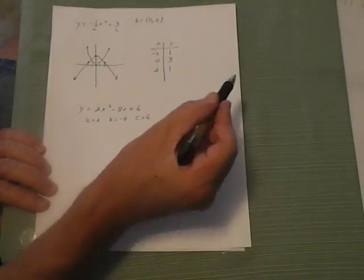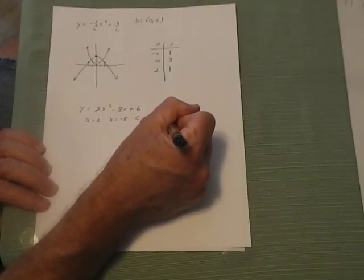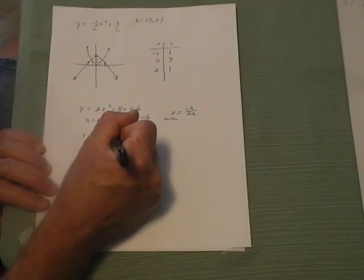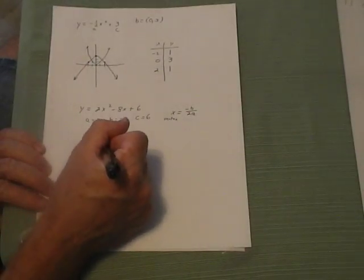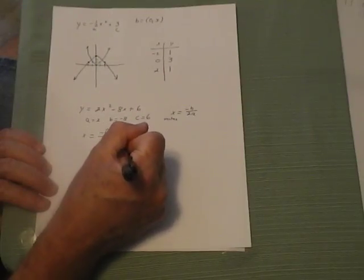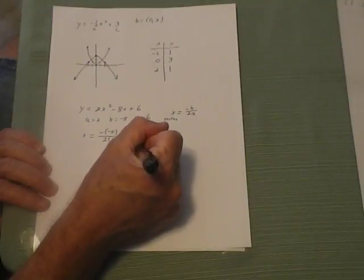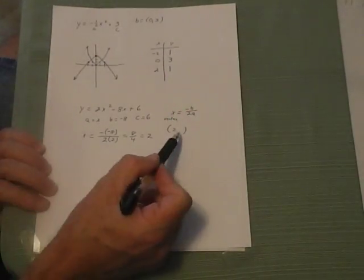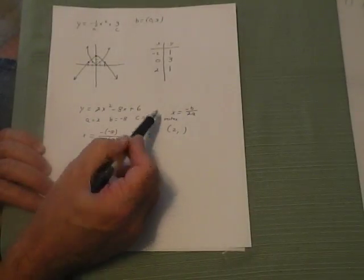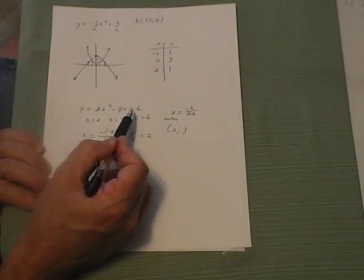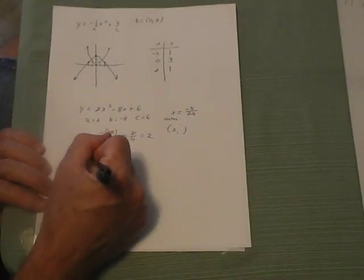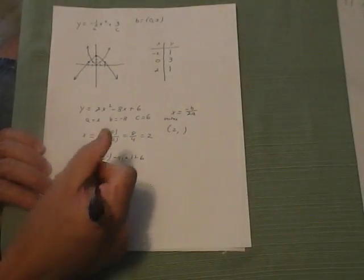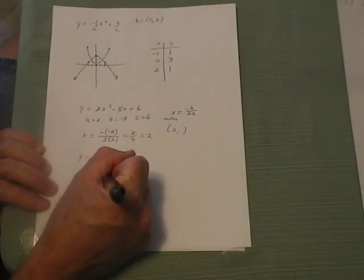The formula x equals negative b over 2a gives us the x value of the vertex. Substituting in, x equals negative (−8) over 2 times 2, which is 8 over 4, equals 2. So the x value of the vertex is 2. To find the y value, we substitute x equals 2 back into the original function: y equals 2 times 2 squared minus 8 times 2 plus 6, which equals negative 2. So the vertex is at (2, −2).